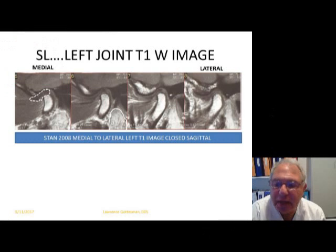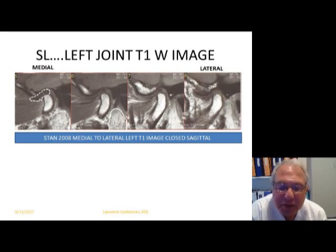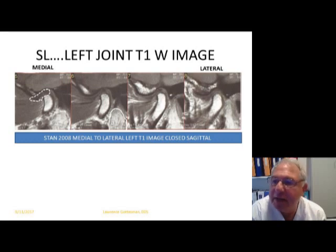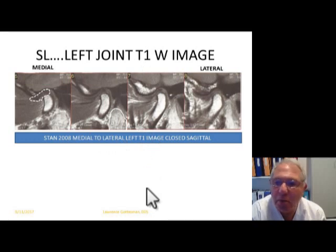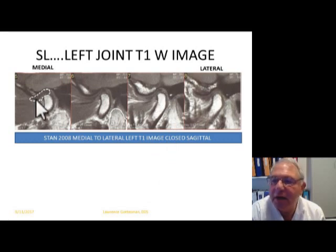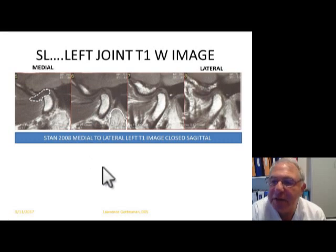Let me show you this patient — a 42-year-old male in the computer industry, working for one of the top financial houses on Wall Street in their IT department. He was complaining of left joint pain. On the T1 MRI image, his left joint looks absolutely normal. In fact, I use this MRI to show what a normal joint should look like. You can see I've outlined the disc in the dotted area — it has a beautiful bow-tie configuration, and the condyle is well positioned — yet this patient has pain.